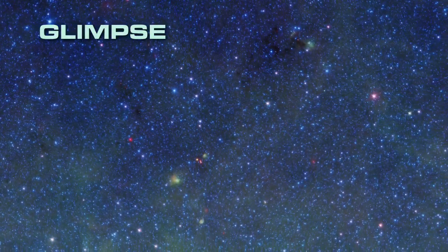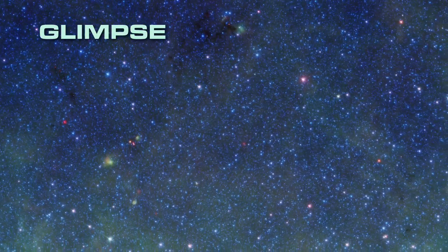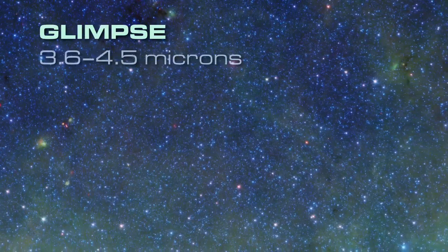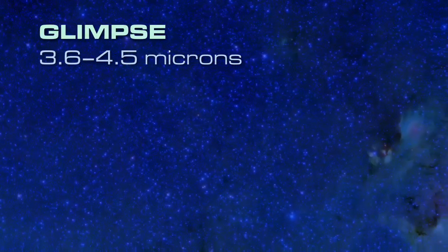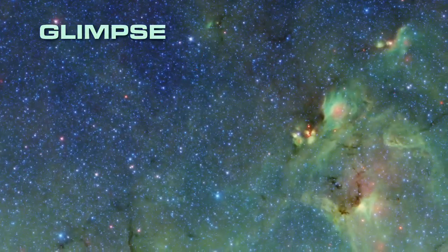The Glimpse part of the survey includes the shorter infrared wavelengths. At 3.6 and 4.5 microns, we see blue stars that, in visible light, are completely hidden by dust.